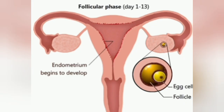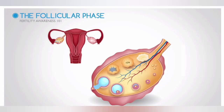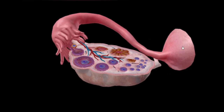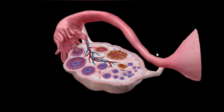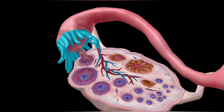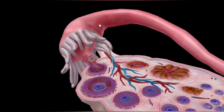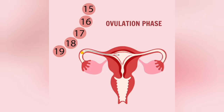The follicular phase typically takes from day six to day thirteen. During this phase, the level of estrogen hormone rises, which causes the lining of the uterus, the endometrium, to grow and thicken. Additionally, FSH (follicle-stimulating hormone) causes follicular growth in the ovaries.